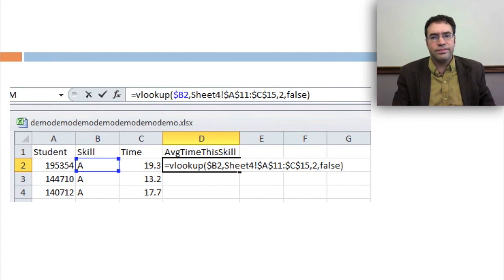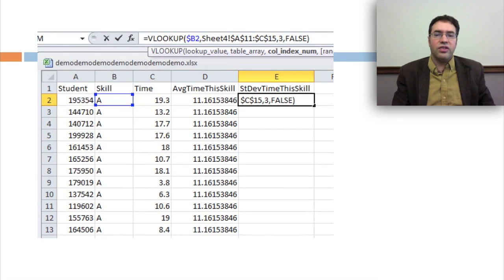You then create the standard deviation and that's the exact same thing except we're looking at the third column of that table back there rather than the first one.